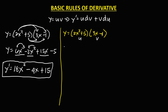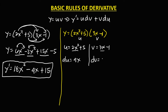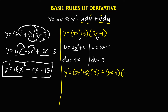U is 2x squared plus 5, and for the derivative of u: derivative of 2x squared is 4x, so du is 4x. V is 3x minus 1, and derivative of v: derivative of 3x is 3, so dv is 3. Then substitute: y prime equals u times dv plus v times du — that is, 2x squared plus 5 times 3, plus 3x minus 1 times 4x.